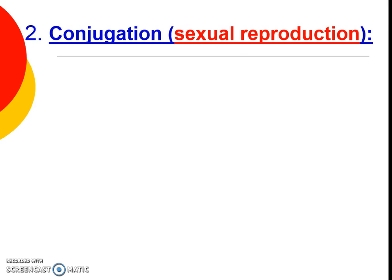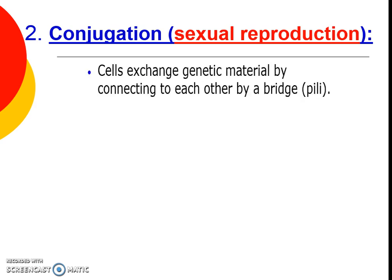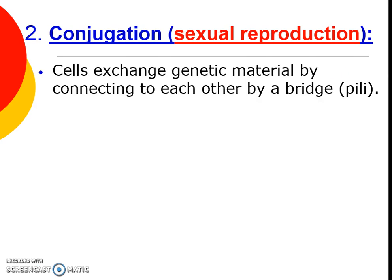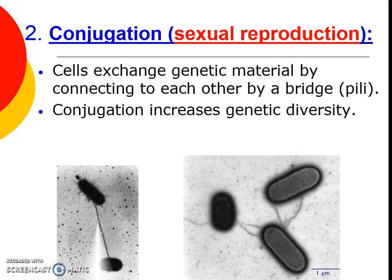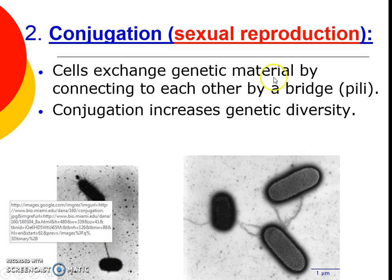There's also a sexual reproduction option called conjugation. This is when different bacteria cells exchange genetic information with one another by sending out a bridge called pili. Sexual reproduction is related to the ability to have genetic diversity, versus all organisms being genetically the same or clones. They send out this bridge called a pili and exchange some DNA through it so they become more genetically diverse.